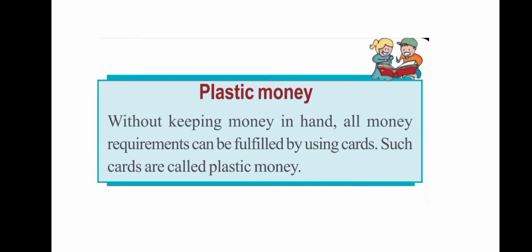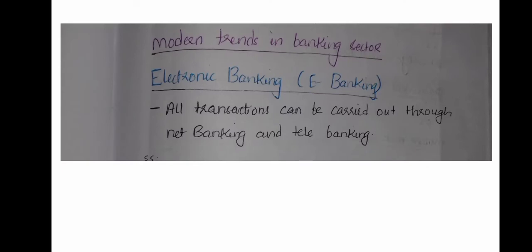Credit cards and debit cards are collectively called plastic money. We use these cards for purchase transactions. Banks also provide electronic banking, including e-banking, net banking, and tele banking.